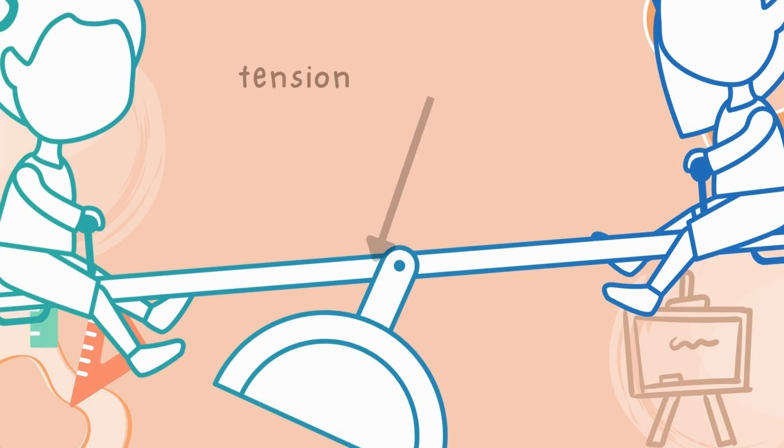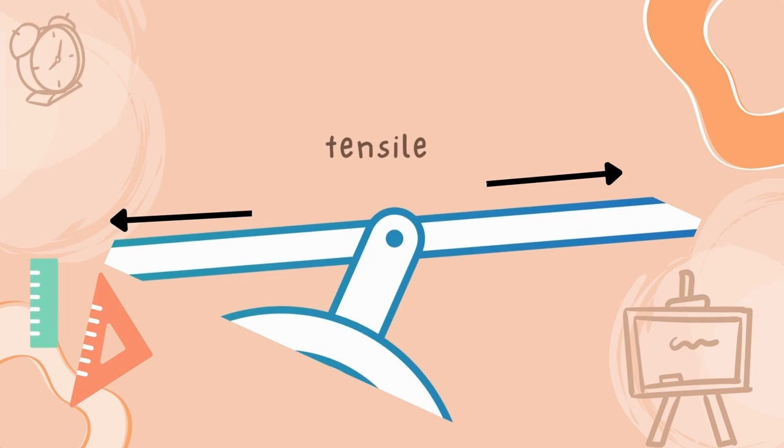Let's now see how tension and compression act in real life. When two people sit on a seesaw, what do you think? Is the metal bar between the two seats experiencing compressive or tensile stress? Well, it's a tricky question. In reality, that bar in bending experiences both compressive and tensile stresses.